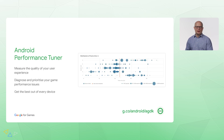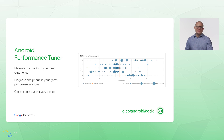Android Performance Tuner is a telemetry offering that is part of Edge SDK and Android Vitals. It helps you measure the quality of your user experience by showing you frame time, loading time, and abandonment rates. It helps you diagnose and prioritize your game performance issues by helping you understand when in the game problems are happening and in what situations. Lastly, it helps you get the best out of every device by helping you better map quality levels to devices.